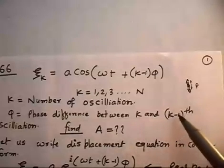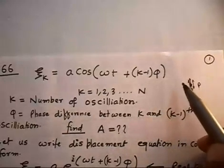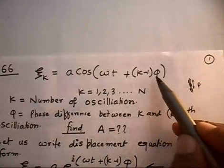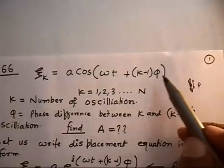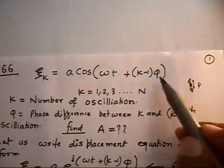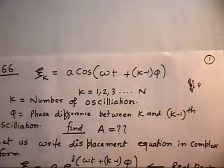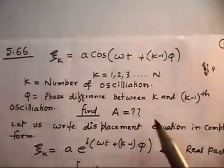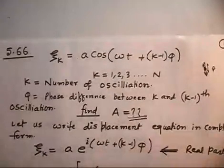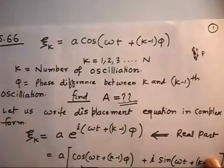φ is the phase difference between the k-th and (k−1)-th oscillation. For example, the 3rd has 2φ and the 4th has 3φ, so the difference is φ. We have to add all these waves and find the resultant amplitude when all oscillations are superimposed.